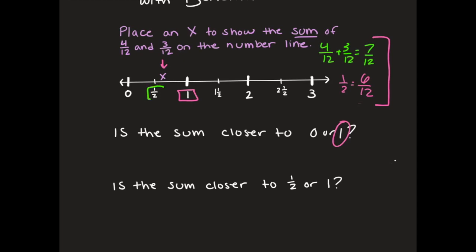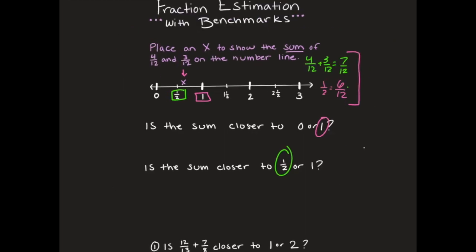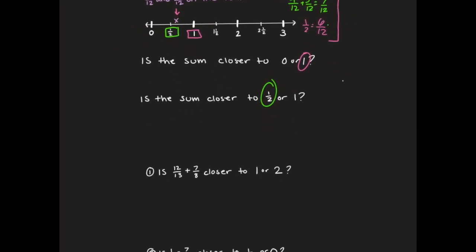The next question says is the sum closer to one half or one? And if I look at my X I can see that I'm closer to one half because that can help me with my answer. I can also see that I have 7/12 and 6/12 is one half, so I'm really close, I'm just one twelfth away. So my answer is I am closer to one half.